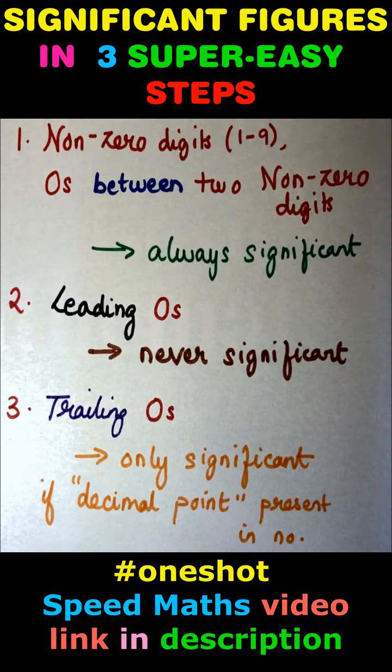In this one-shot video, we will tell you how to count significant figures in any number using three rules. Rule 1: Non-zero digits are always significant. Zeros between two non-zero digits are also significant.